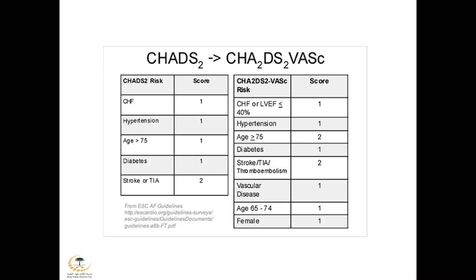The CHADS₂ risk score includes congestive heart failure, hypertension, age above 75, and prior stroke or TIA. According to the points, there will be risk stratification for stroke and medical management. The updated score, CHA₂DS₂-VASc, elaborates more on CHF or lower ejection fraction; hypertension remains the same; higher points are given for age above 75; and they added vascular disease, age 65–74, and female sex — each worth one point.